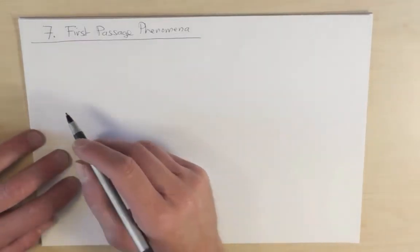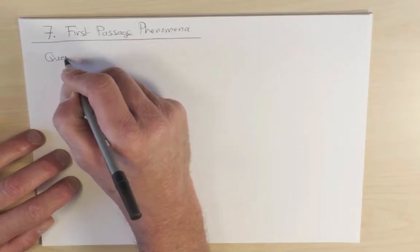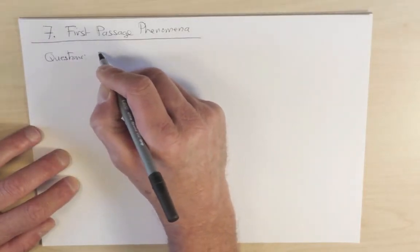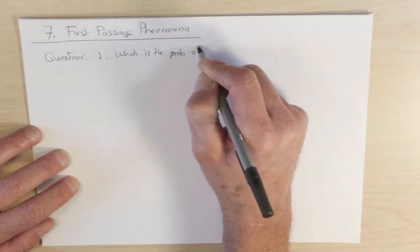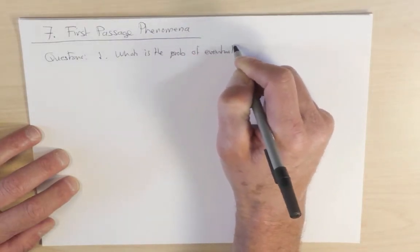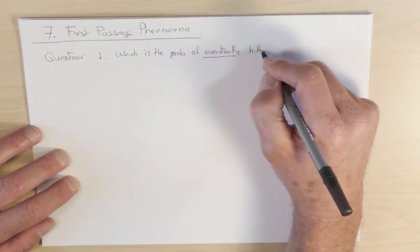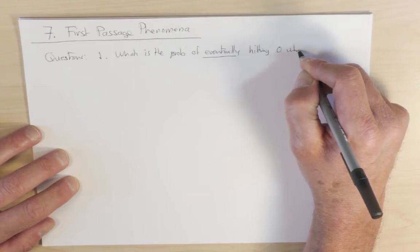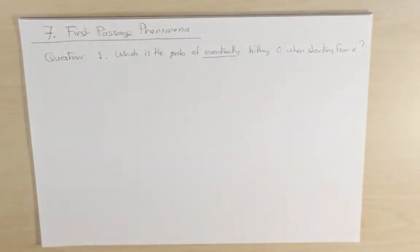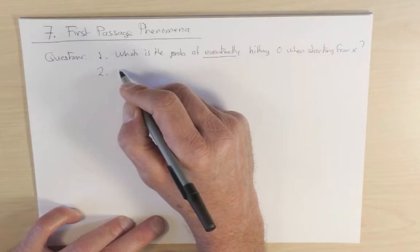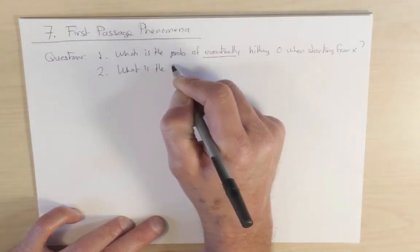Let's ask the following two basic questions about a one dimensional random walk. First, what is the probability of eventually, and notice the word eventually, hitting the origin when starting from x? So x is just some arbitrary point on the one dimensional line. Let's take it to be positive and we're asking, what is the probability that a random walker that starts at x eventually hits the origin? And the second question is, what is the time to hit the origin?